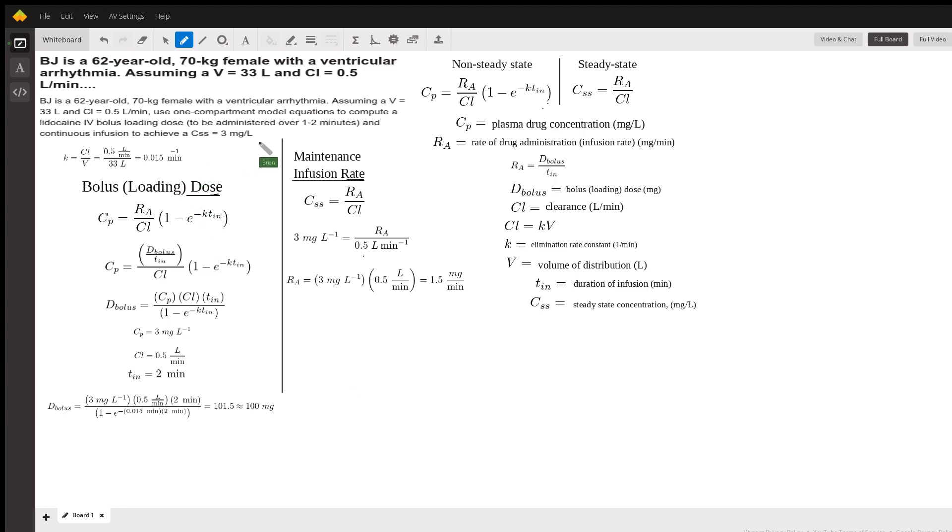Now, the continuous infusion rate required to achieve a steady-state concentration of three milligrams per liter is calculated by rearranging the steady-state equation in which the steady-state concentration is the rate of administration divided by the clearance. So when we rearrange that, we get 1.5 milligrams per minute. That's our infusion rate. Remember, rate is per unit time.